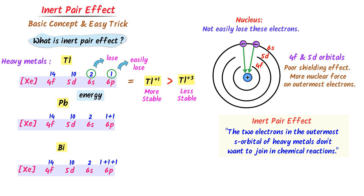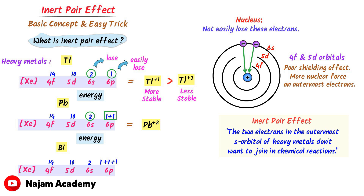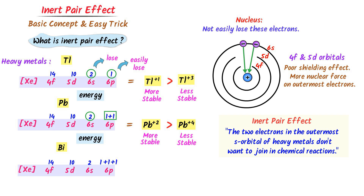Similarly, lead can easily lose the two electrons in the 6p orbital to form the lead +2 ion. On the other hand, we need to provide some sort of energy to lead to lose the two 6s electrons, giving us the lead +4 ion. Therefore, lead +2 ion is more stable than lead +4 ion, and this is due to the inert pair effect.